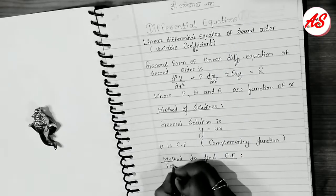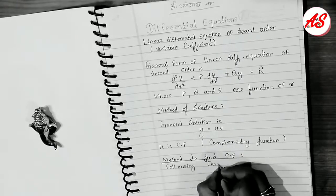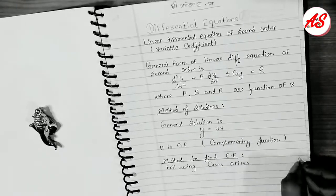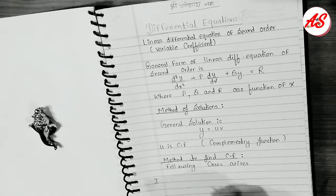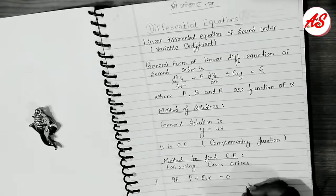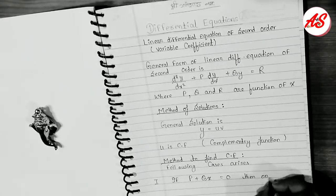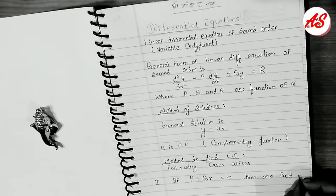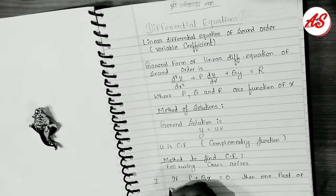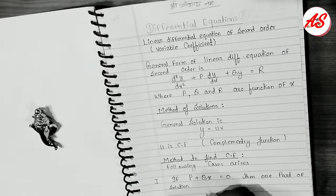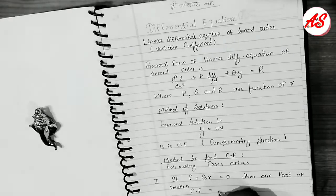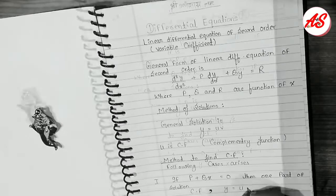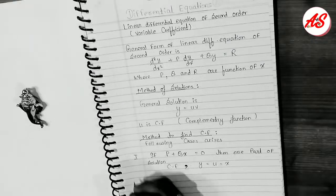The first method: if P + Qx = 0, then one part of the solution, that is the CF, is y = u = x.